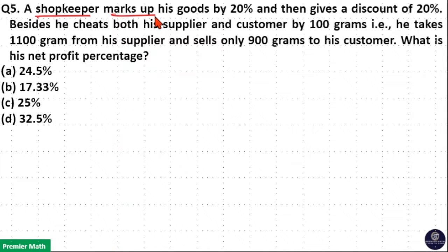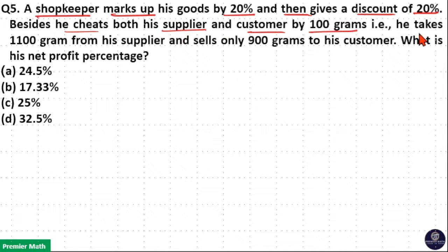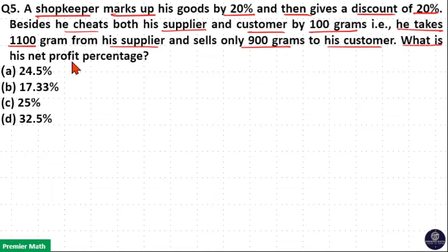A shopkeeper marks up his goods by 20%, then gives a discount of 20%. Besides, he cheats both his supplier and customer by 100 grams — that is, he takes 1100 grams from his supplier and sells only 900 grams to his customer. What is his net profit percentage?